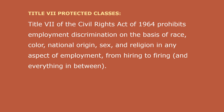Title VII of the Civil Rights Act of 1964 prohibits employment discrimination on the basis of race, color, national origin, sex, and religion in any aspect of employment from hiring to firing and everything in between. These traits are also called protected characteristics and referred to as protected classes.